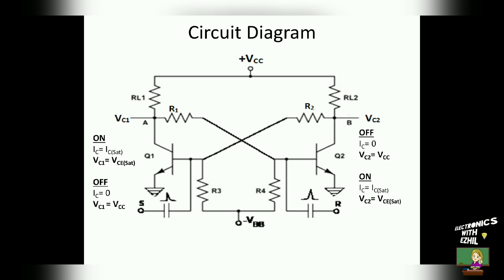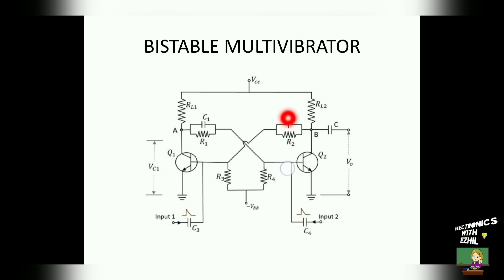The transition from one stable state to another stable state will not be done quickly because of the resistive coupling between the output of one transistor to the input of the other. So we connect capacitor C2 in shunt with resistor R2, and capacitor C1 in shunt with resistor R1. These two capacitors increase the speed of the transition and are called speed-up capacitors. They are also called commutating capacitors or transpose capacitors. Because of these capacitors, the transition from one stable state to another is done very quickly.